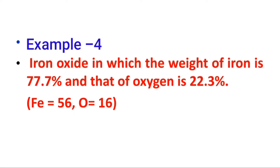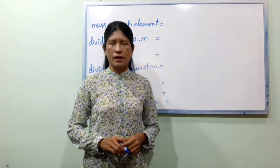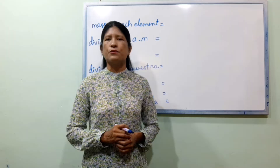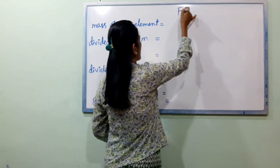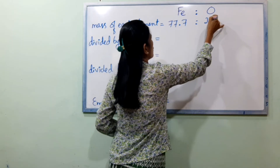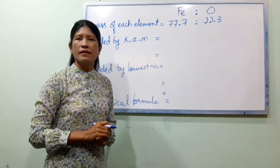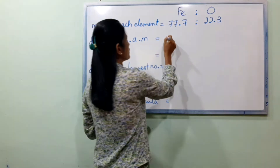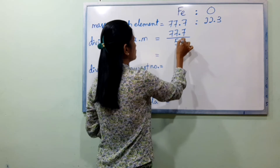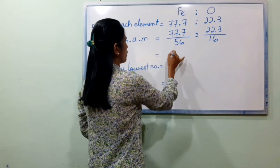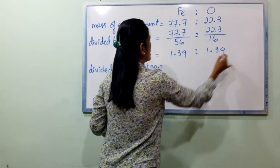Example 4: An iron oxide in which the weight of iron is 77.7% and that of oxygen is 22.3%. Deduce the empirical formula. Iron: 77.7 divided by atomic mass 56 equals 1.39. Oxygen: 22.3 divided by atomic mass 16 equals 1.39.